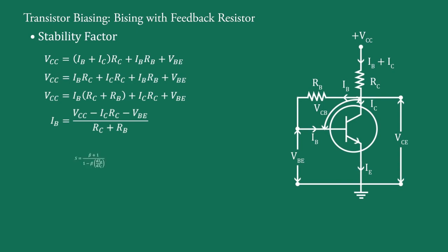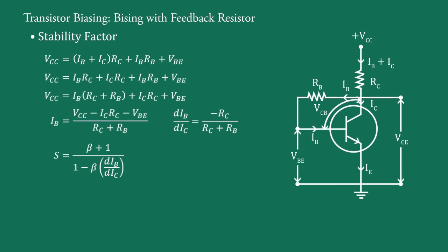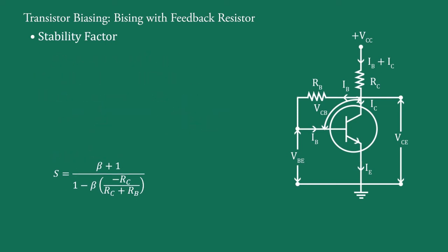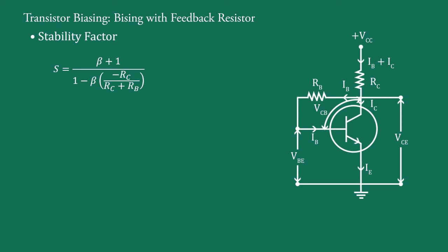The stability factor is defined as S = (β + 1) / (1 − β × dIB/dIC). We differentiate the IB expression with respect to IC to get dIB/dIC = −RC / (RC + RB). Substituting: S = (β + 1) / (1 − β × (−RC / (RC + RB))). Simplifying, we obtain: S = (β + 1) × (RC + RB) / (RC + RB + β × RC).